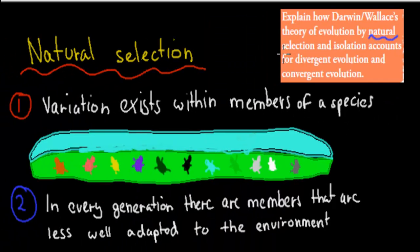Those two names — Darwin and Wallace — you should know them, but I'm not going to go over them in this video; I'll cover them in the next video. So, natural selection: there are four main points to natural selection that you need to know.